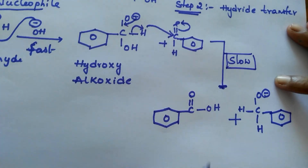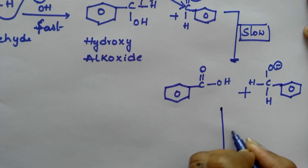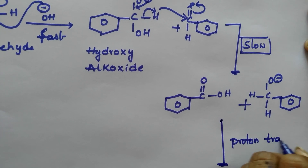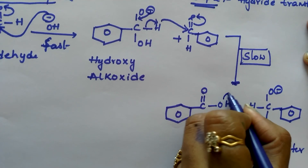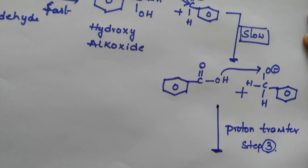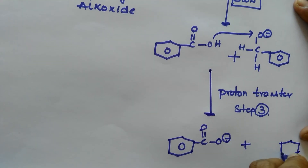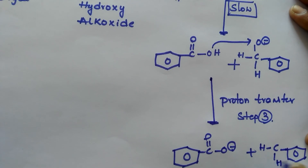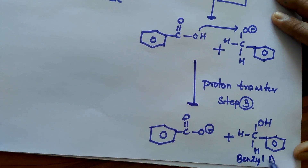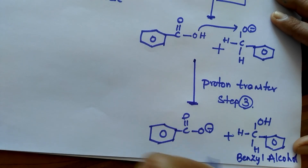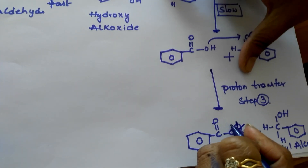The rate of the reaction depends upon this step. In the next step, proton transfer takes place — this is step number three. From this molecule, hydrogen transfers to this oxygen, and it results in the formation of benzene ring with CH2OH — that is benzyl alcohol. And this is an acid. Here potassium ion is present, so the K plus ion comes and attaches here, forming K-O minus K plus.